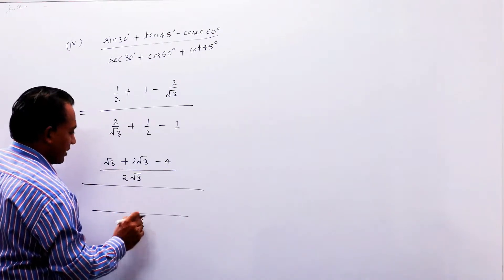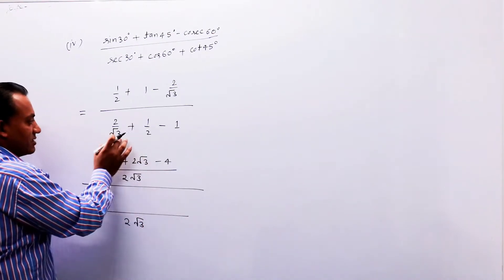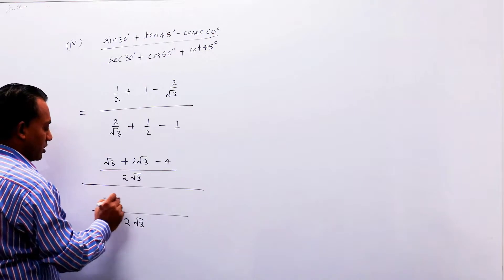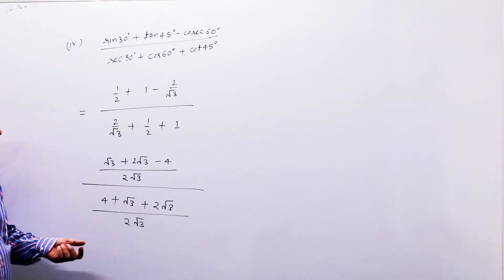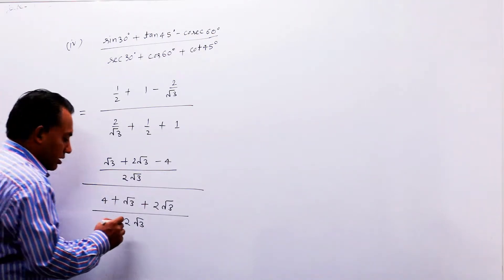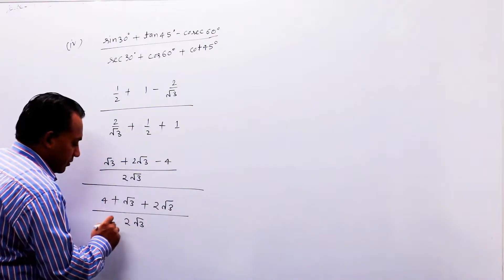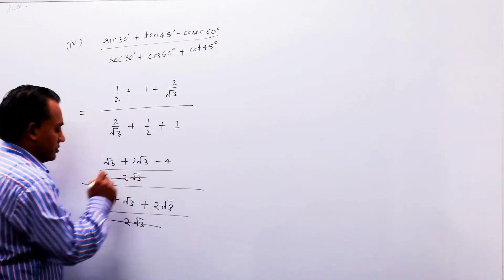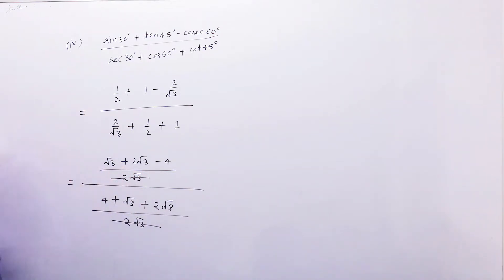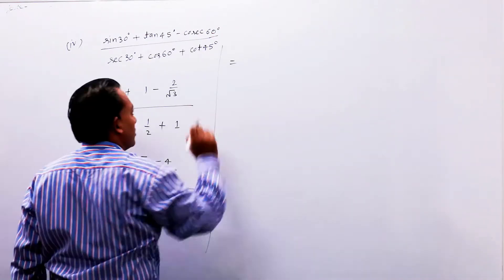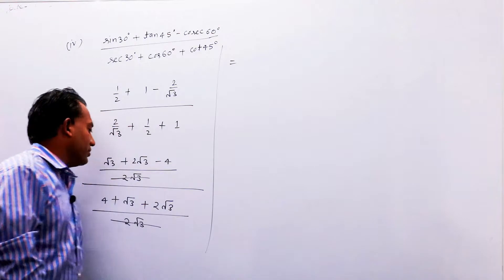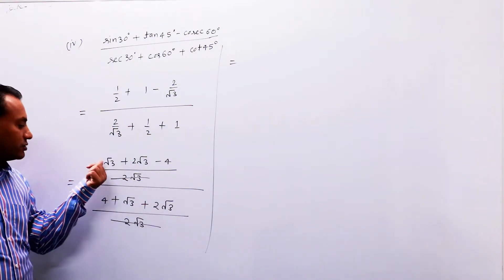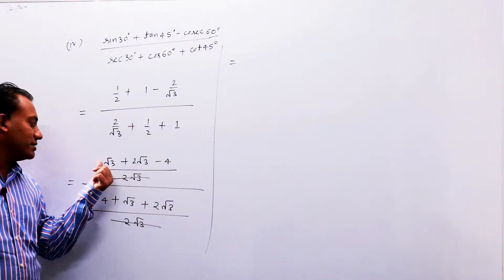2√3 का LCM आ गया, फिर उसके बाद 4 आएगा। अब आप देख पा रहे हैं कि denominator से denominator cancel हो गया। अब जो values होंगी कुछ इस प्रकार से — यह light term है √3, यहाँ one time है।